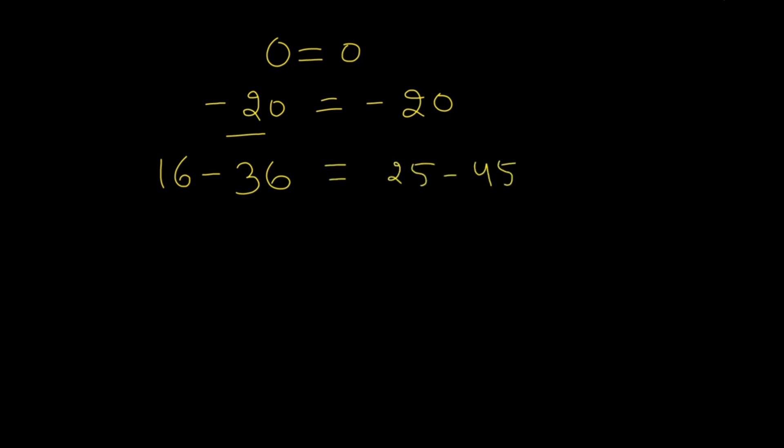Till now, everything is okay. And then I can write this 16 as 4 squared minus 36 as 4 times 9, which equals, I'm leaving some gap here.